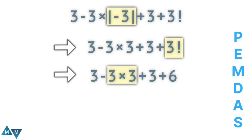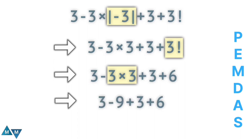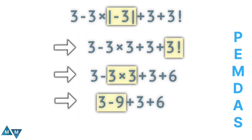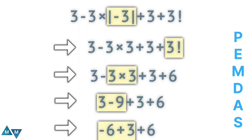Now we have the following expression, which only contains plus and minus signs — both with the same priority — so we solve left to right. Three minus nine gives minus six. Now we have minus six plus three plus six. Minus six plus three gives minus three, and adding six finally gives three.